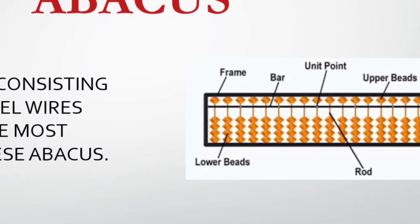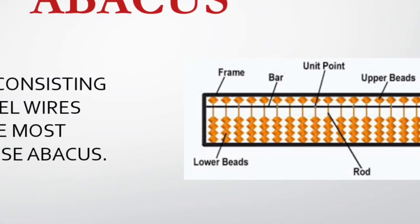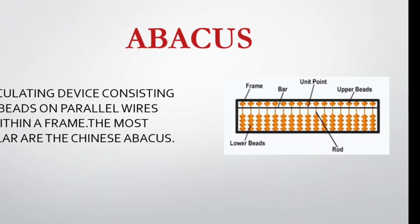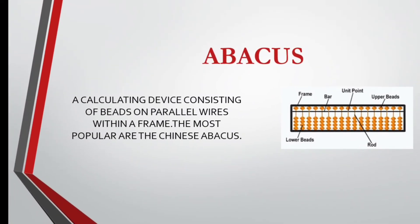Here they have mentioned the parts of an abacus. You can see the outer one is the frame, the inner vertical wires are known as rods, and the horizontal wire is the bar. We have upper beads and lower beads, and a point known as the unit point. So this is your abacus.